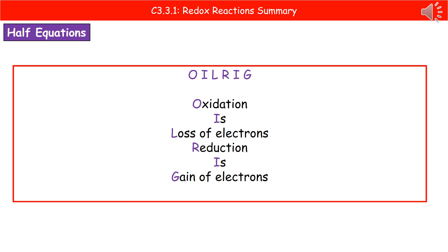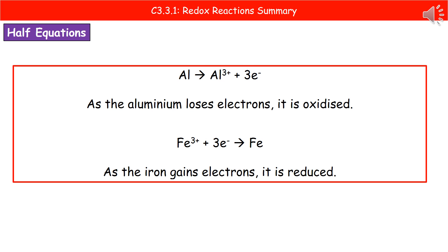To help us know whether something is an oxidation or reduction when we're talking about electrons, remember the acronym OIL RIG: Oxidation Is Loss of electrons, Reduction Is Gain of electrons. When we consider our thermite reaction, because the aluminium is losing electrons, it's oxidised. Whereas the iron gains electrons, therefore it's reduced. Make sure you learn the phrase OIL RIG and apply it to identify which species is being oxidised and which is being reduced.